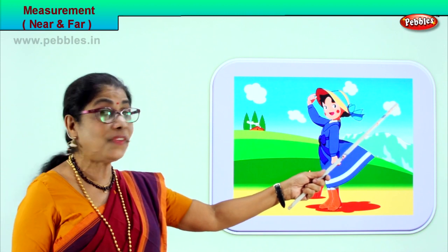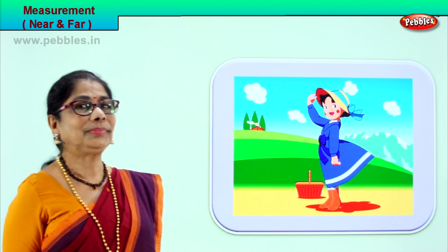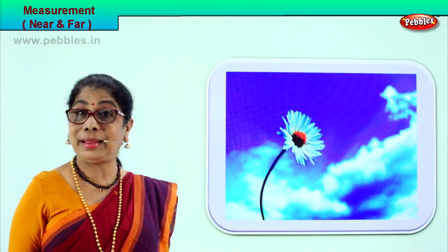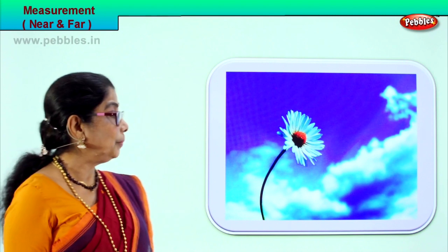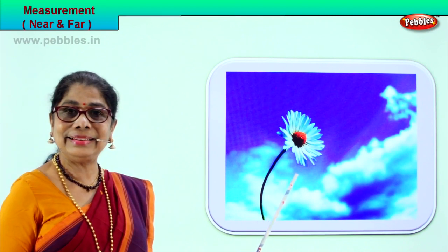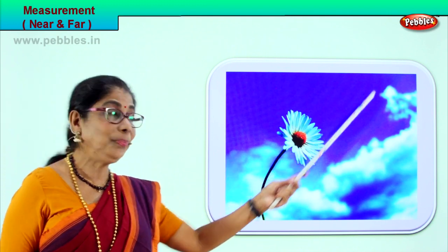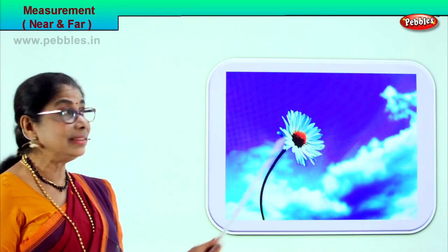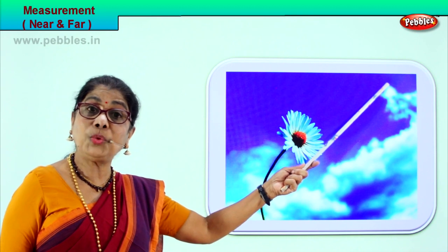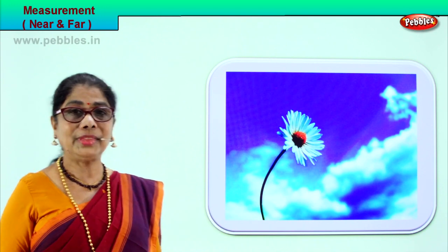Let's take another picture and learn to understand these measurements. Look at this flower — it is near. We look at that cloud far away. The flower is near and this little white cloud is far away in the sky. Near and far — now you understand.